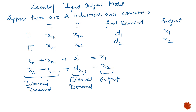See this table once again. D1, D2 is the final demand of the outside customers. The sum of X11, X12 and D1 equals X1. The sum of X21, X22 and D2 equals X2. So internal demand plus external demand equals output.